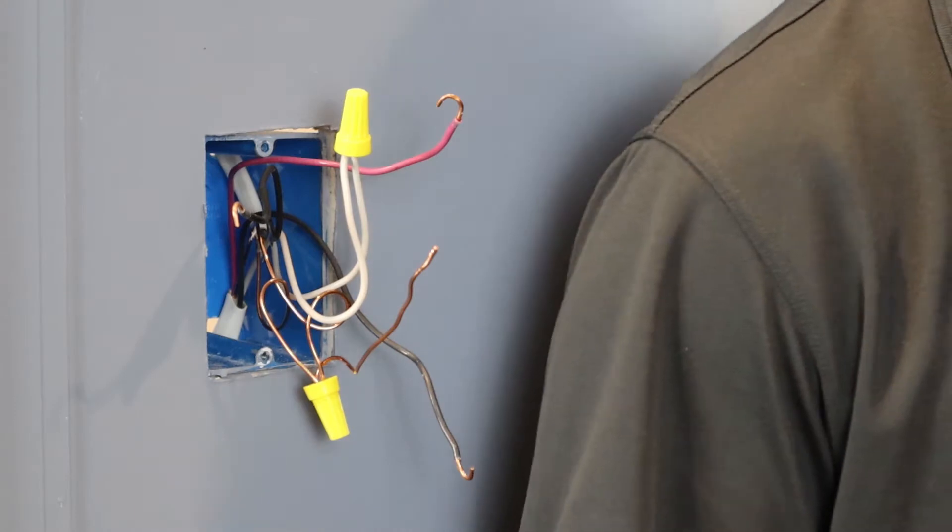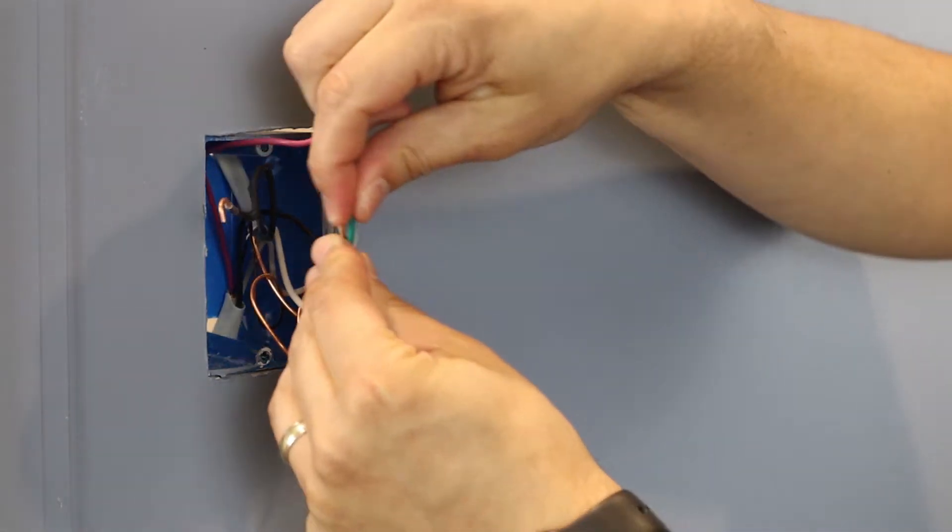Once you've confirmed you have neutrals and you've tagged your common wire, you can remove your old switch. Now that your old switch is removed, we want to connect the green ground wire to the ground wire coming from your wall.